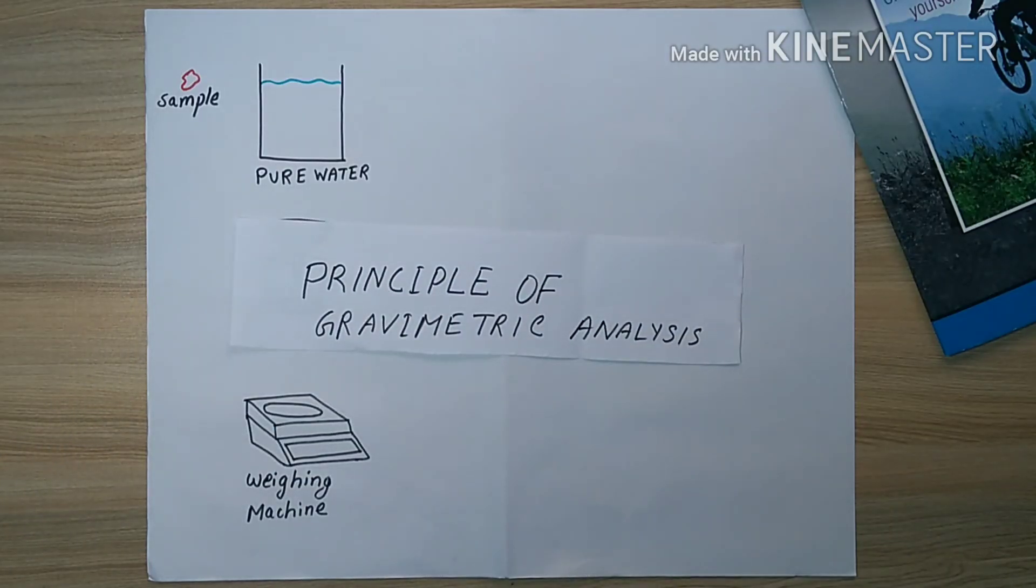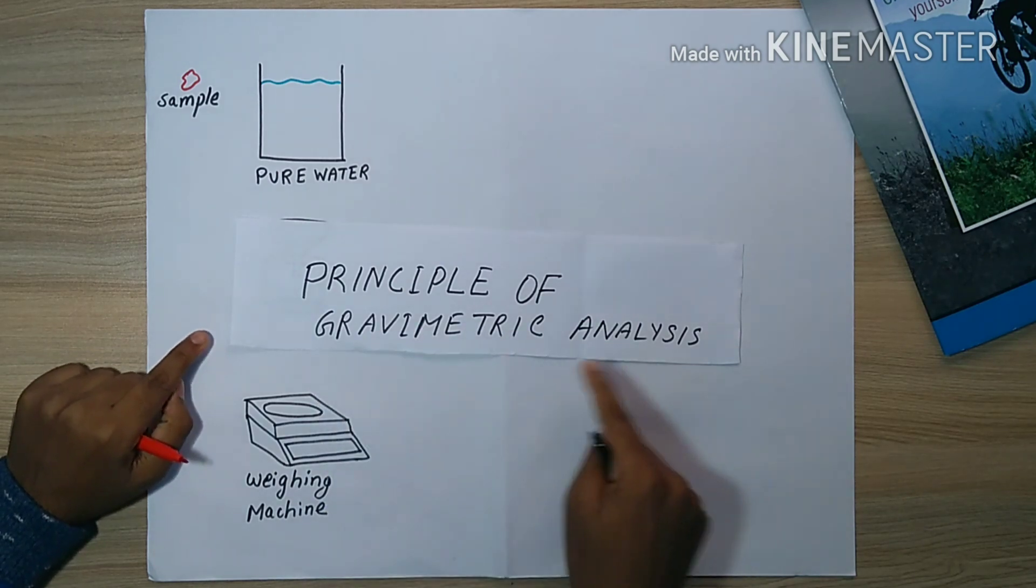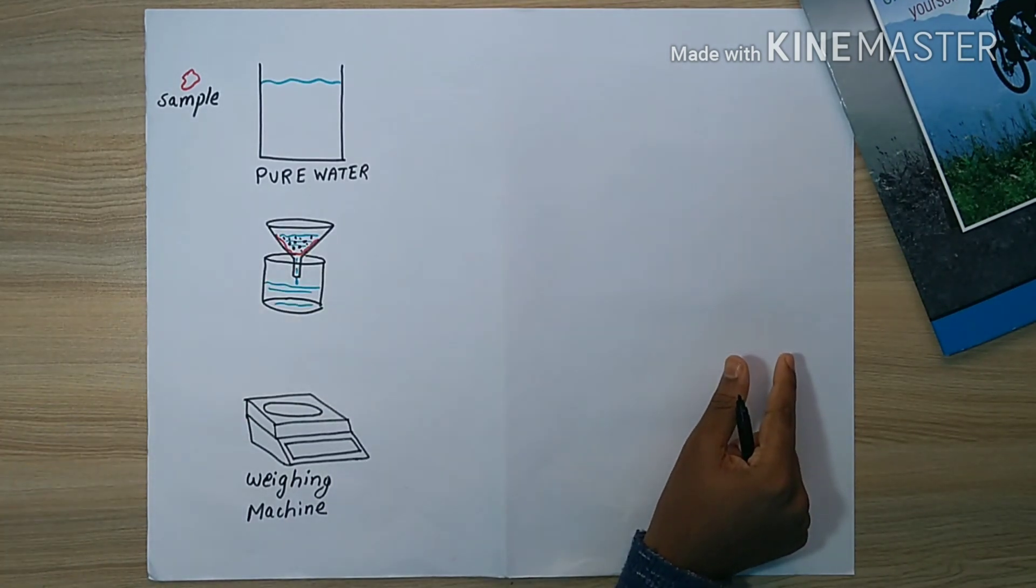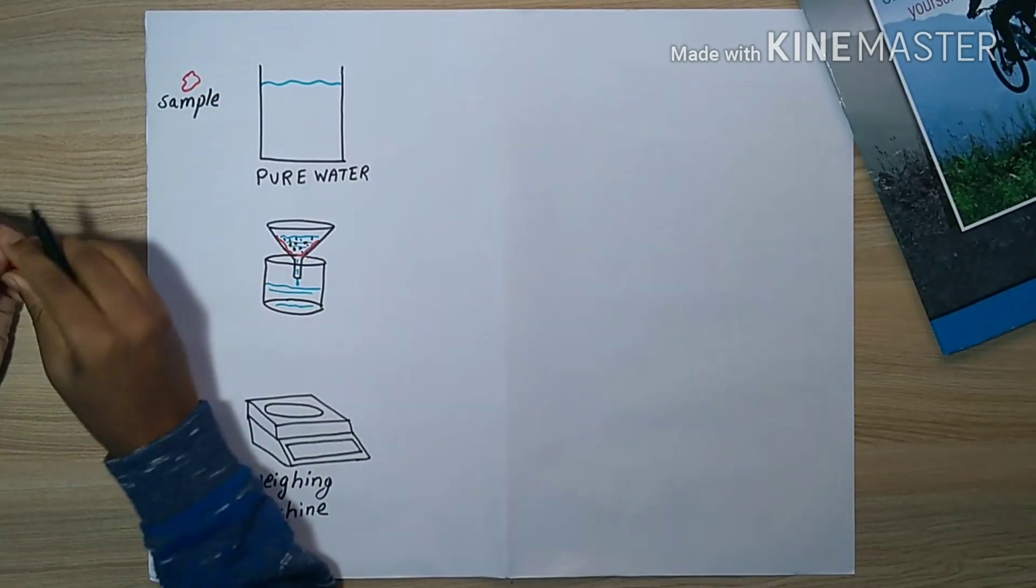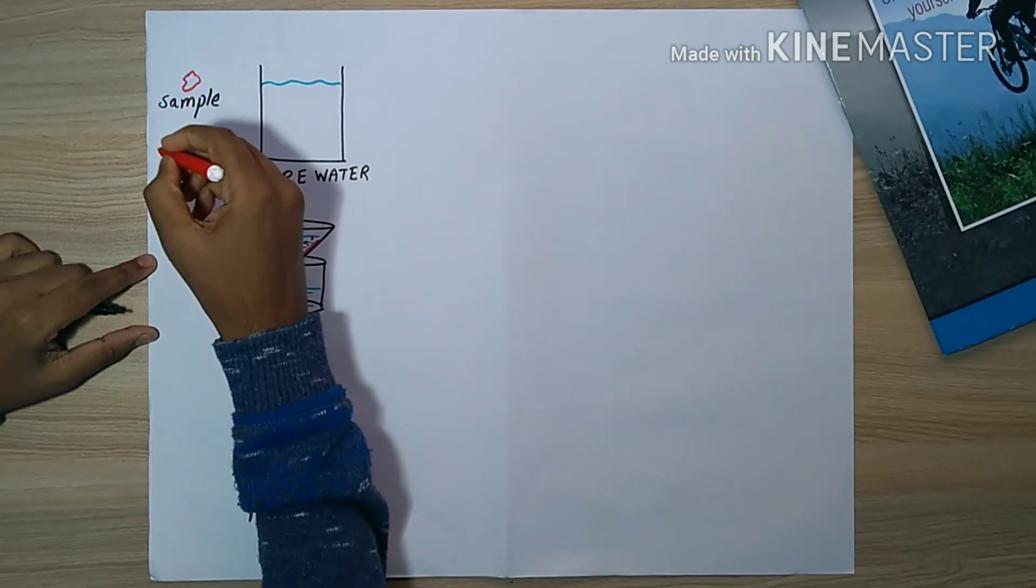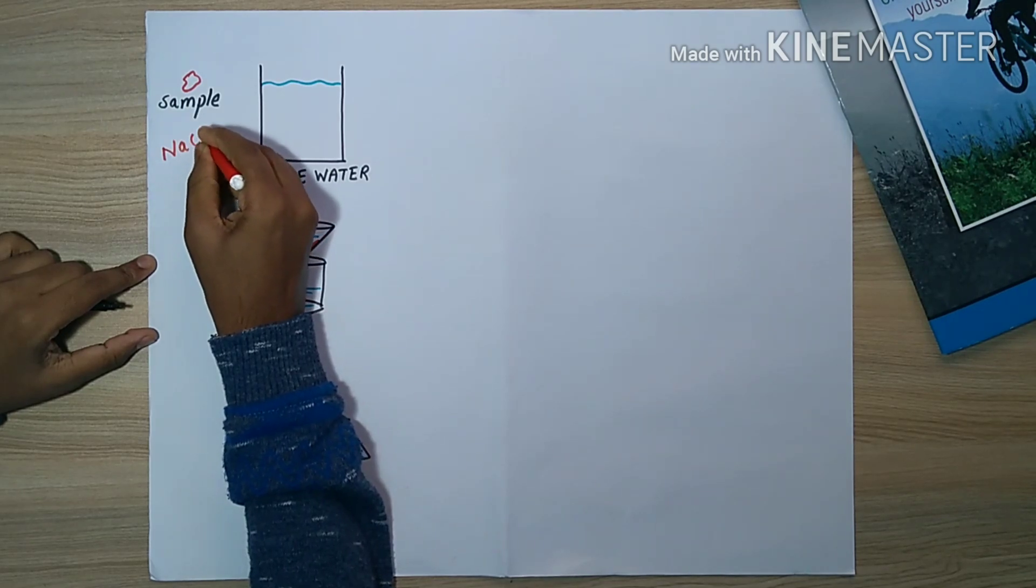Let's jump onto the principle. This is the principle of gravimetric analysis. The first step involves drying of the sample.